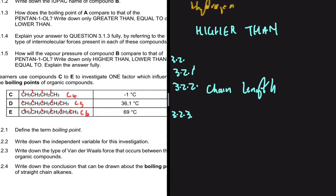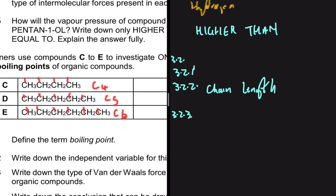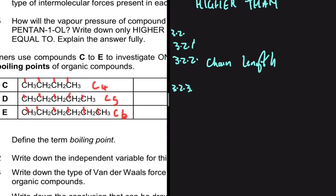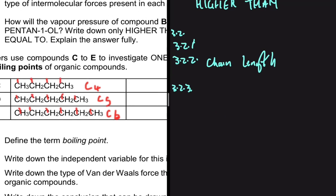For 3.2.3, we identify the type of Van der Waals force between these organic compounds. Compounds C, D, and E are all alkanes. The intermolecular force occurring between them is London forces, also called induced dipole forces.